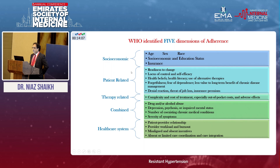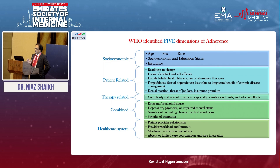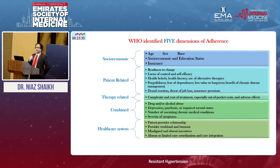The second important group is patient-related factors. You have to understand whether your patient is able and willing to take medicines. There are individual factors like forgetfulness, fear of dependence — patients worry about being on lifelong medication — and denial, where patients say they feel fit and don't understand why they should take medicine. These are very important patient-related factors.